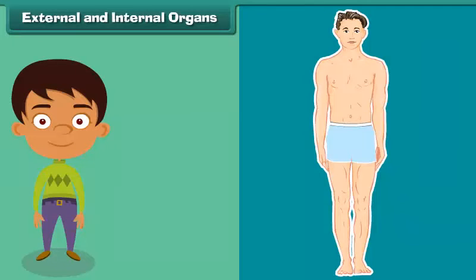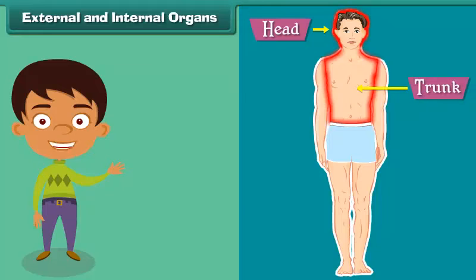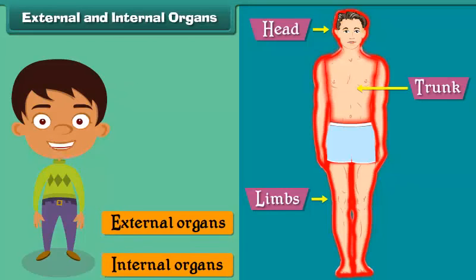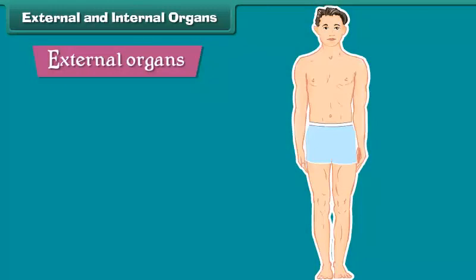External and internal organs. Each of the three main parts of the human body bear many organs. These organs may be classified as external organs and internal organs. The organs that can be seen from outside are called external organs — for example, eyes, ears, nose, mouth, and limbs.